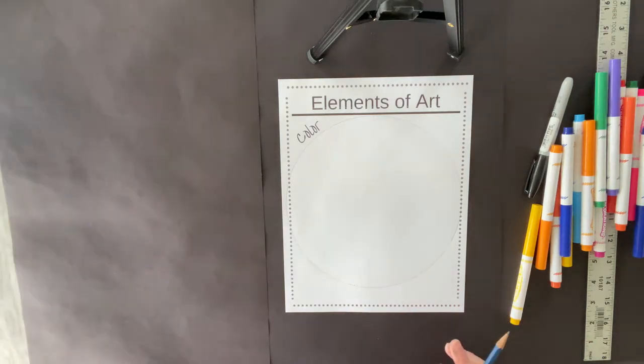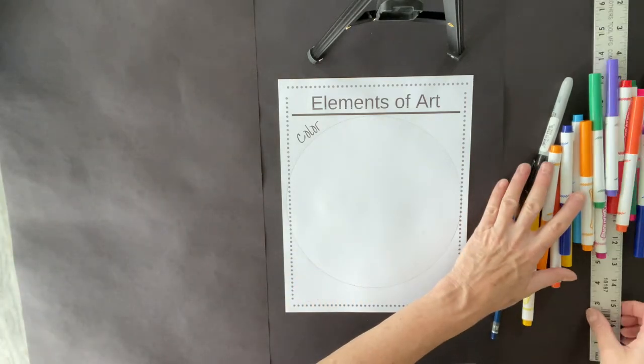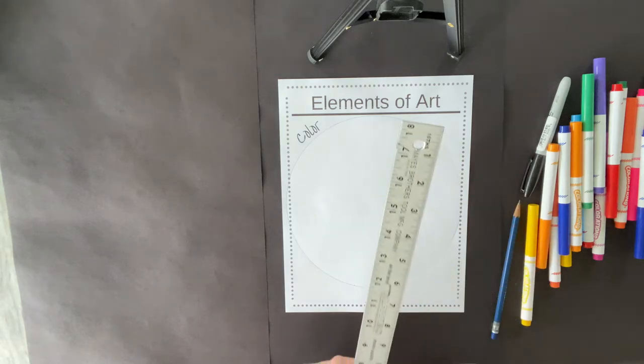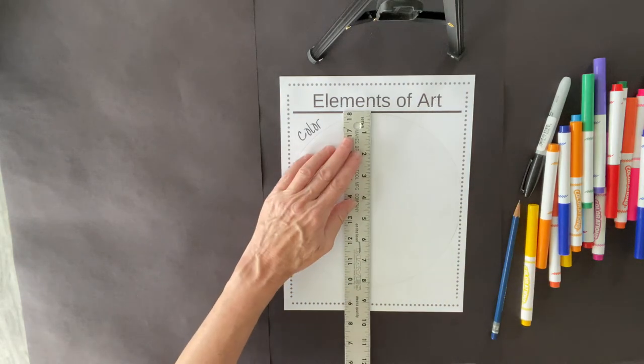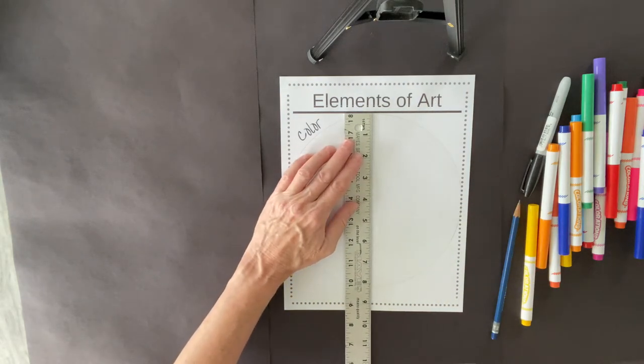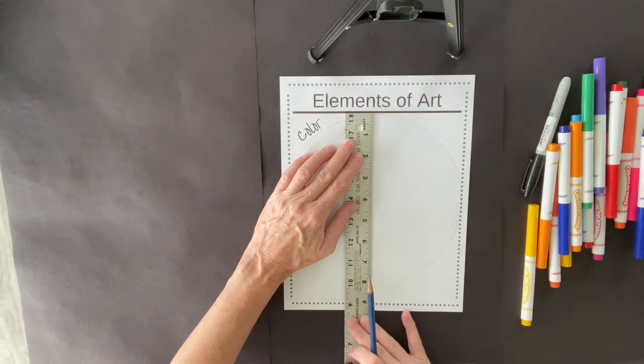I'm going to set the bowl aside, and then I'm going to use a ruler. If you don't have a ruler, just draw a straight line as best you can. I'm going to draw a line straight down the center,